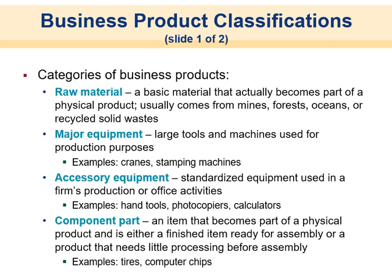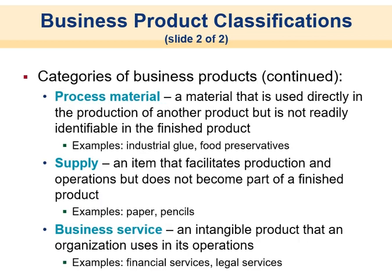Component parts are items that become part of a physical product — either a finished item for assembly or one needing further processing. Classic examples: tires as inputs for BMW, or computer chips as inputs for Intel. Processed material is used directly in production of another product but is not readily identified — think food preservatives in a frozen lasagna, or glue that holds things together.